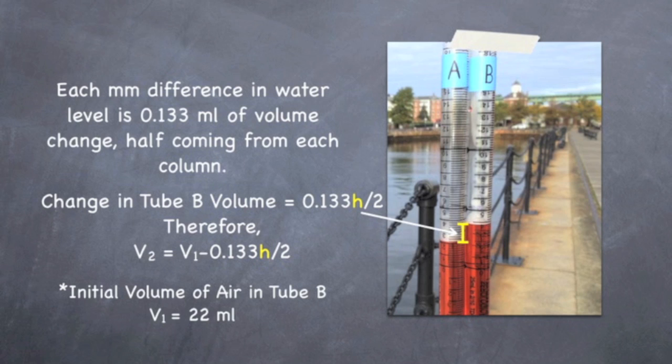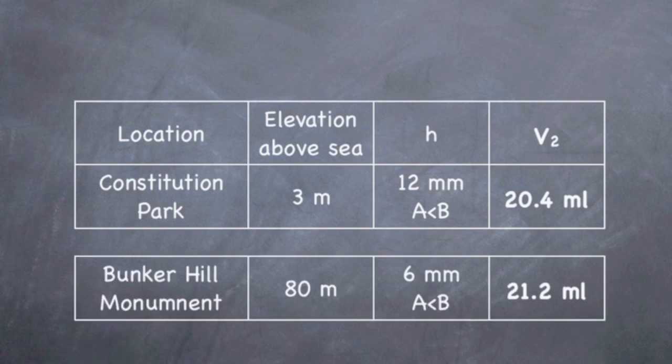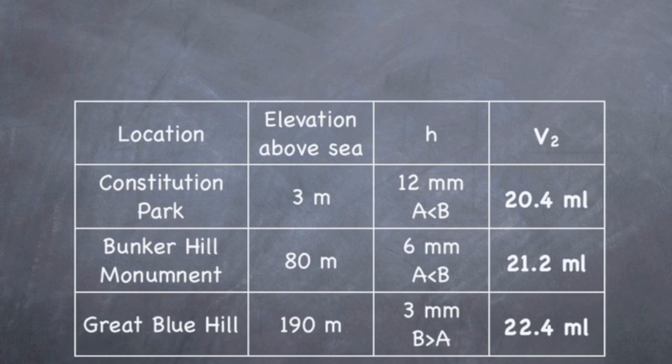Therefore, the final volume in tube B that we saw in the field is V2 equals the initial volume, V1, of 22 mils minus the change in volume. So using this formula, I went ahead and calculated the final volume in tube B at each of our locations. At Constitution Park, the final volume of tube B was 20.4 mils. At Bunker Hill Monument, 21.2 mils. And at Great Blue Hill, 22.4 mils.